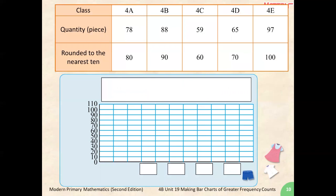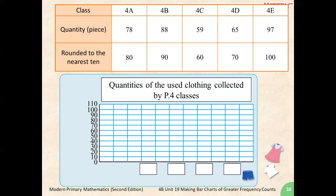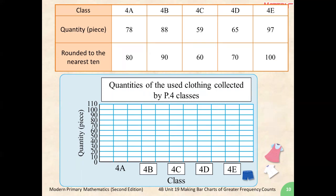Now, when making a bar chart, the first item we need to add is the title. Next, we will have to add the horizontal axis representing the class and the vertical axis representing the amount of used clothing collected. Because this is a 1 to 10 representation bar chart, each section will be going up by 10.